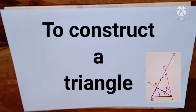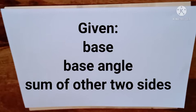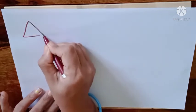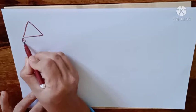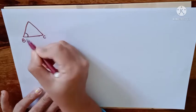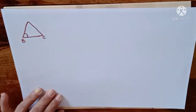Hello friends, today we are going to do some construction from grade 9. The construction is to construct a triangle given its base, a base angle, and the sum of two sides. What we are given is a base BC, one of the base angles, and instead of the two individual sides, the sum of those two sides.